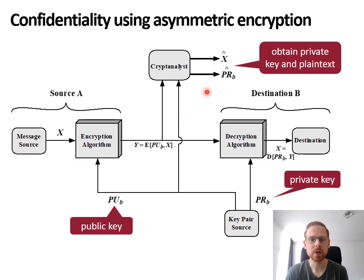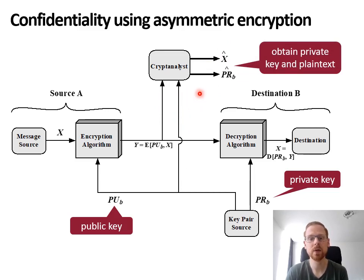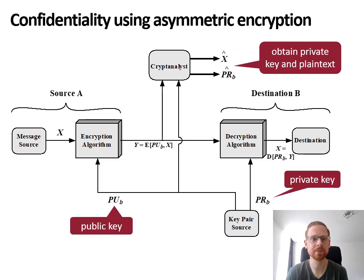Cryptanalysts, just like with symmetric encryption, will try to intercept ciphertext and public keys — which are available, for example, to an eavesdropper — to obtain the private key and the plain text message X, or at least to estimate them.